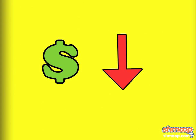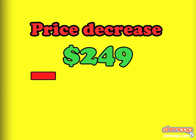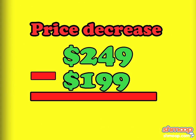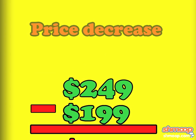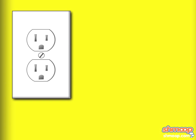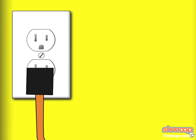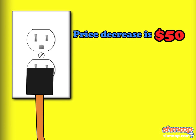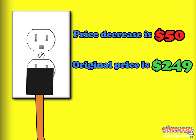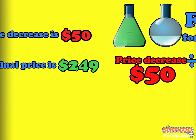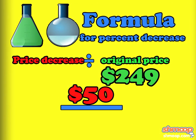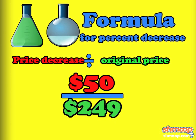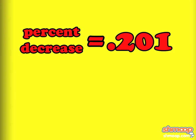First, let's find the price decrease, which is the original price minus the discounted price. $249 minus $199 equals $50 — that's how much the price went down. Now, let's plug in the numbers we know. Price decrease is $50, original price is $249. So this gives us our formula: percent decrease equals $50 divided by $249.